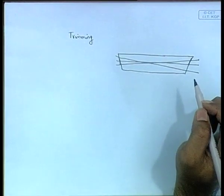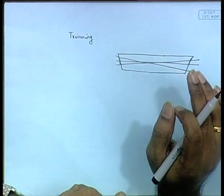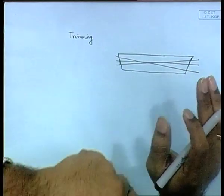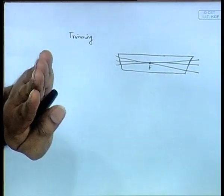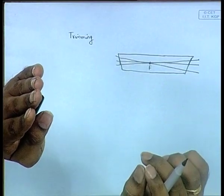This process is called trimming, similar to heeling in the transverse direction. A couple of important points to note: in trimming, we always consider that trimming occurs about the center of flotation. If the ship trims in either direction, the center point about which it trims is always the center of flotation.